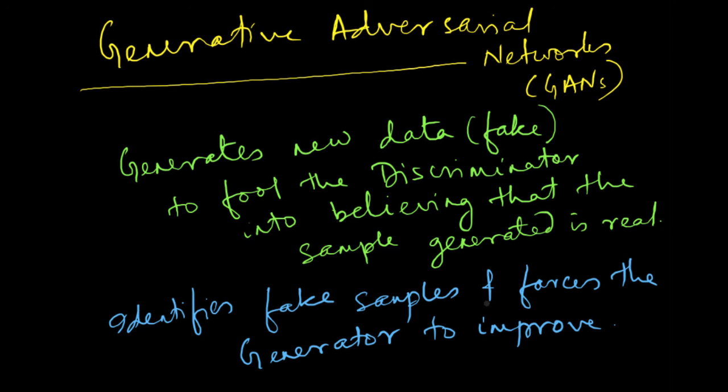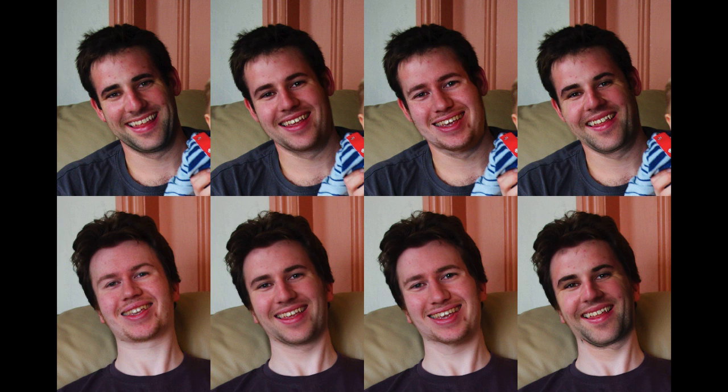This is a cyclical process that goes on - the generative part of the model is able to generate fake images or fake videos which the discriminator cannot separate from actual real images.